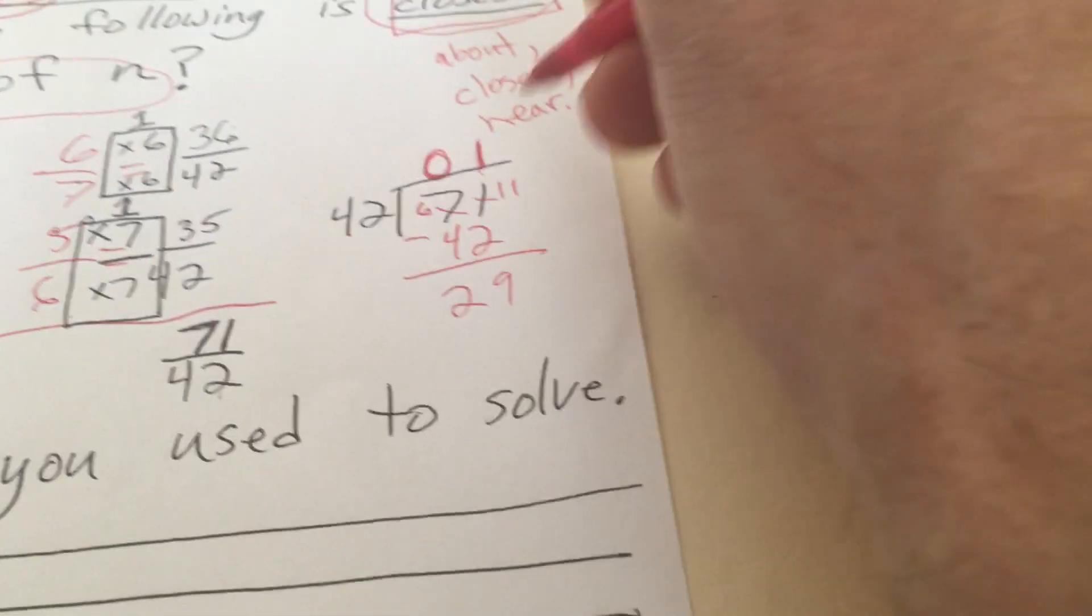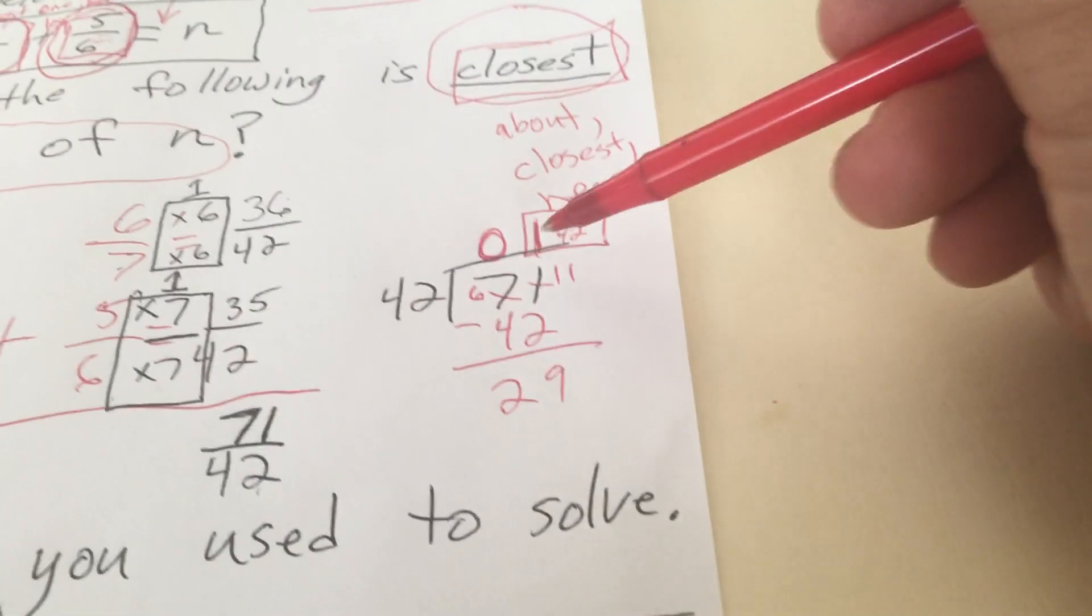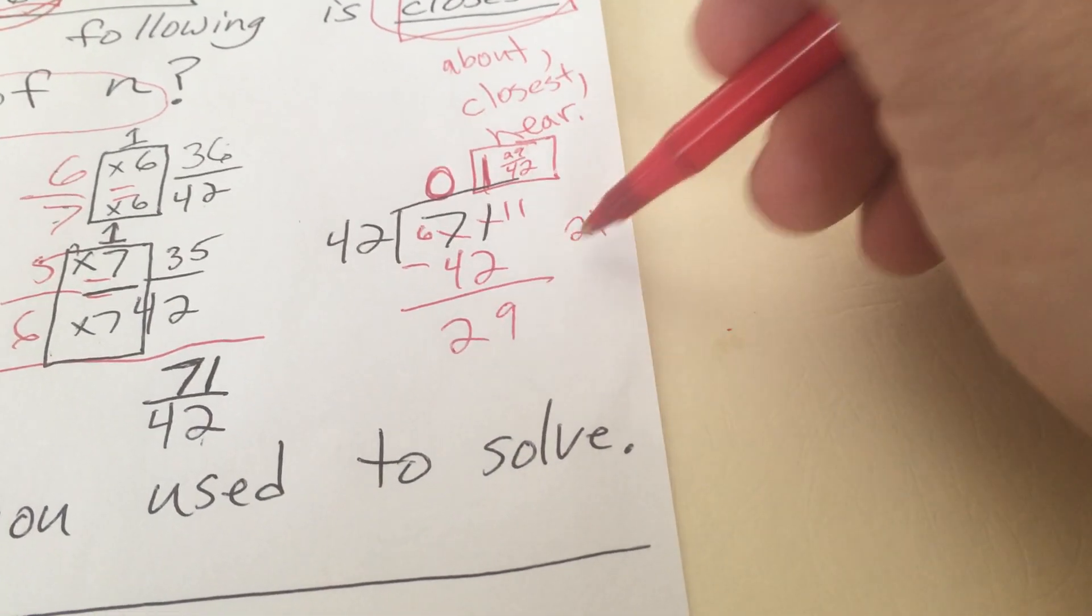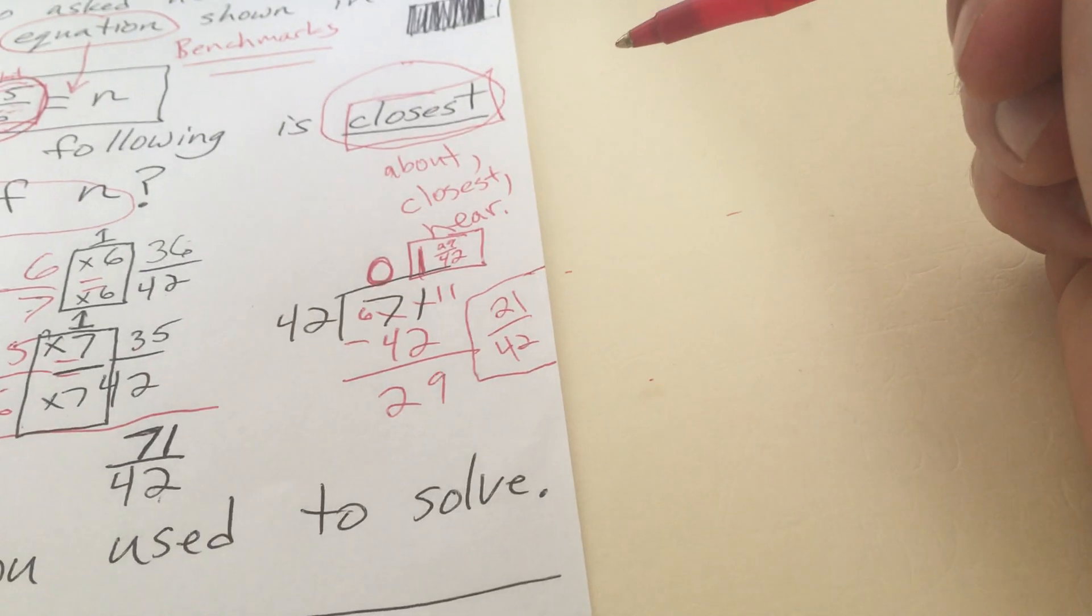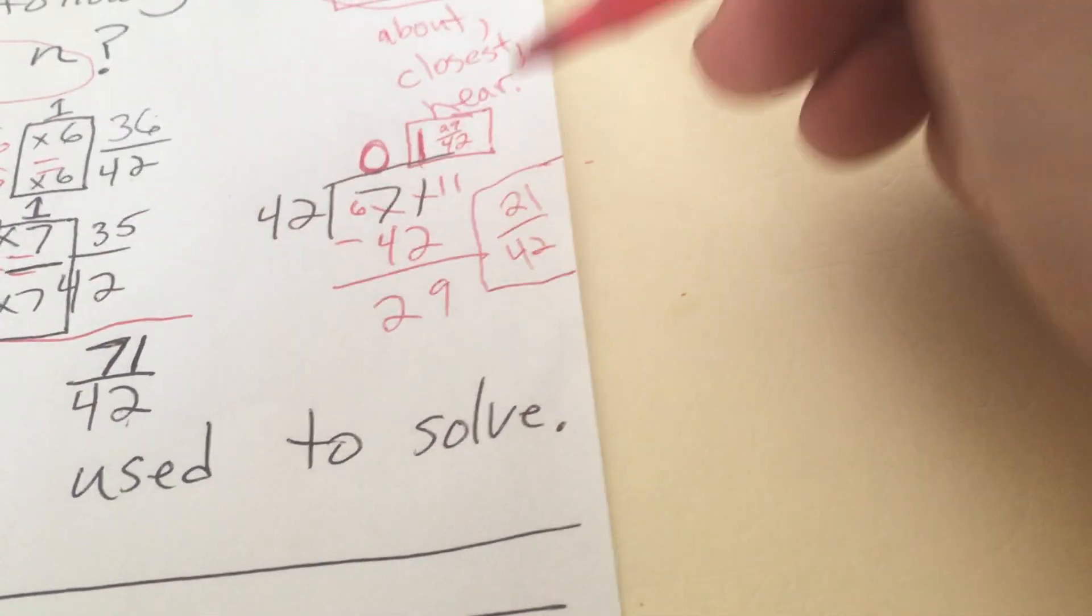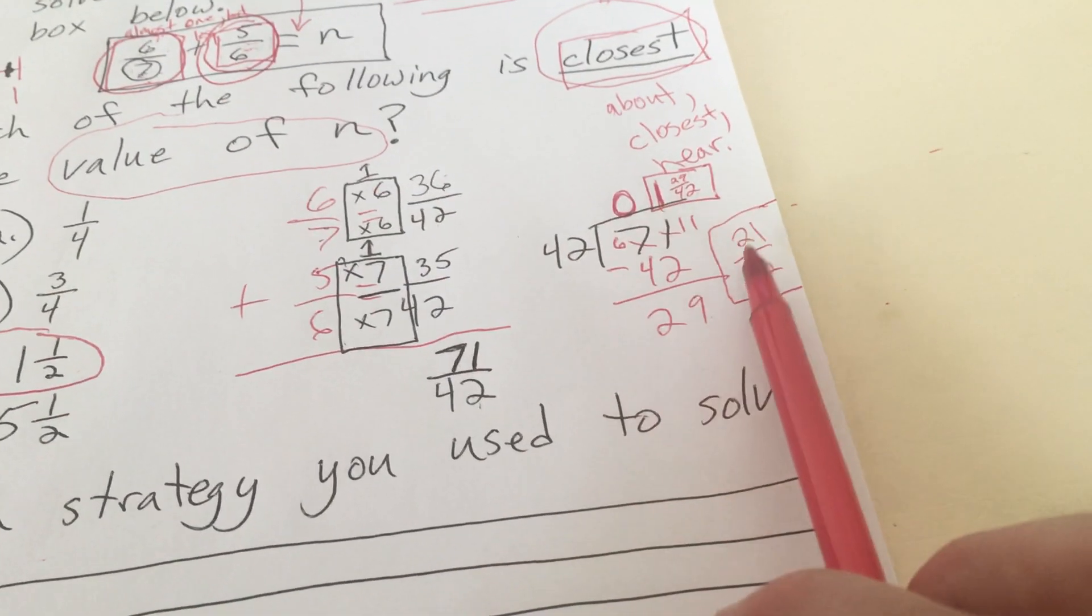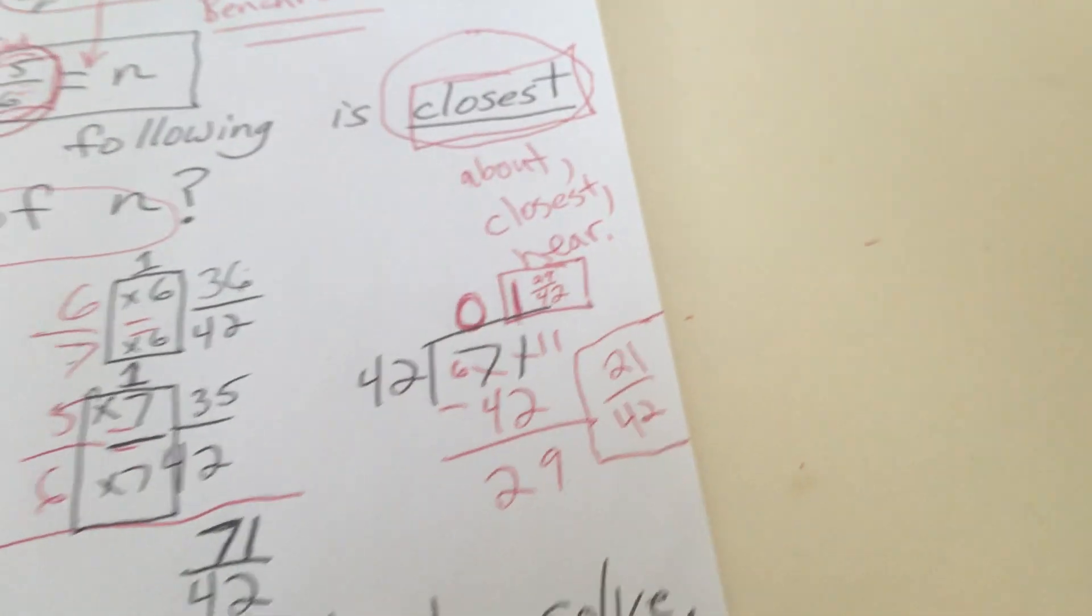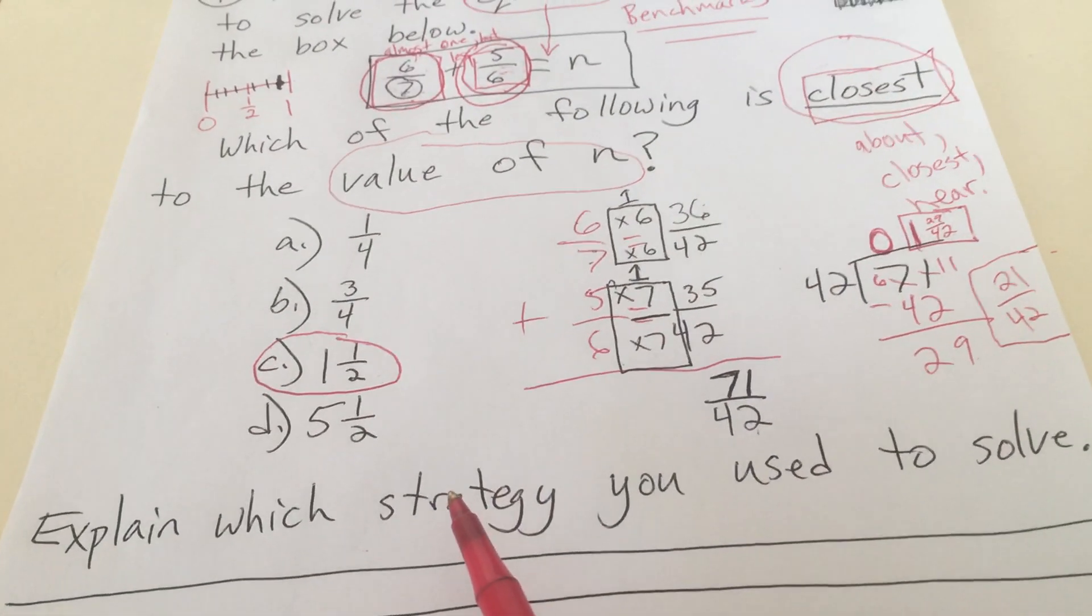So now we're going to borrow and there's a remainder of 29. So the answer is 1 and 29 42nds. 21 42nds would be half because 21 is half of 42. So that would be equal to a half. So since it's 29 out of 42, it's just a little bit more than half. So it's 1 and a little bit more than half. So the closest answer, even though it wasn't exactly 1 and a half because that would be 1 and 21 out of 42, and it was 1 and 29 out of 42, so it was a little bit more than 1 and a half, but that is the closest choice to the value of n.